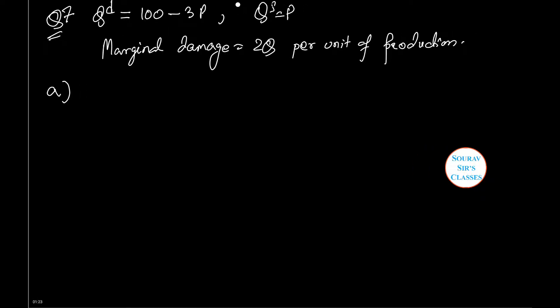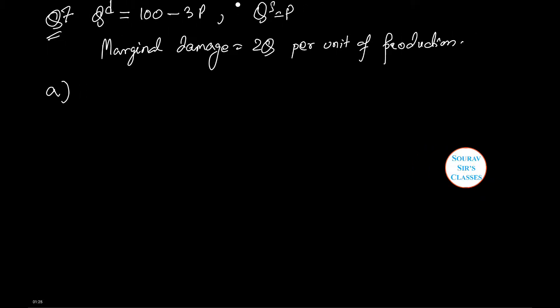Thus, when without government intervention, we make demand equal to supply as QD equals QS. So, 100 minus 3P equals P, or 100 equals 4P, that is P equals 25.